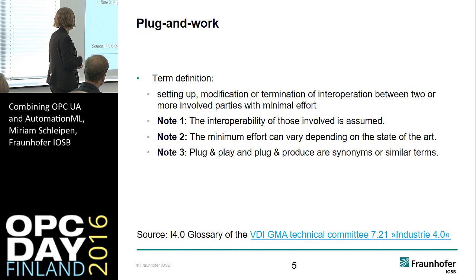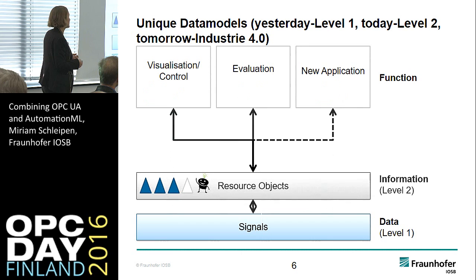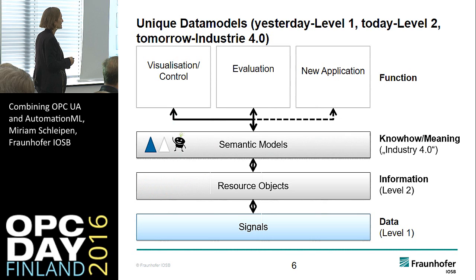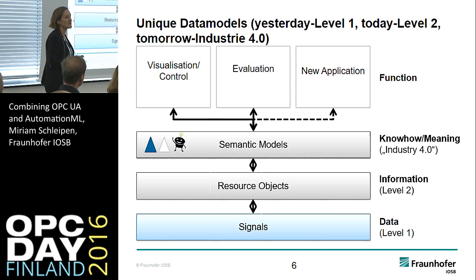If you look at what you exchange: with normal legacy communication you have signals; with OPC UA you have resource objects; and if you put semantic models on top of that, you can really transport with OPC UA the meaning of the objects you communicate. These semantic models are the companion specifications.